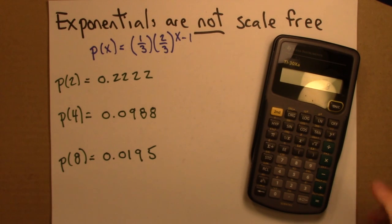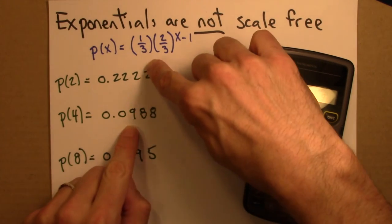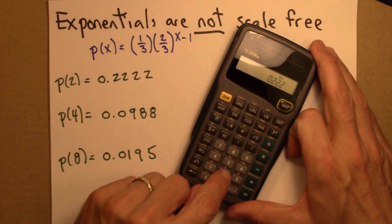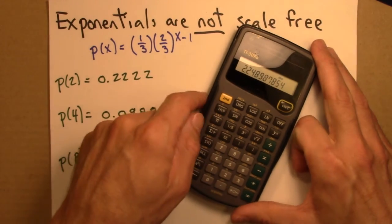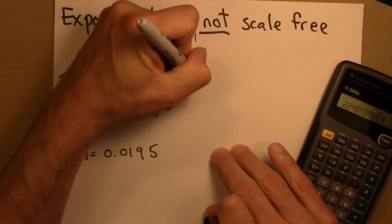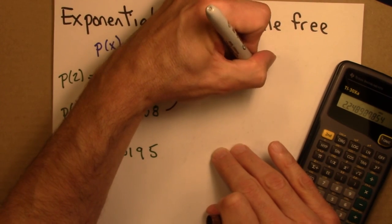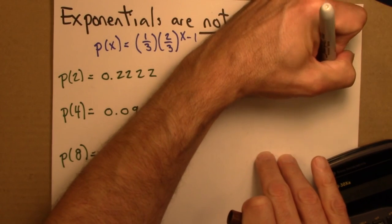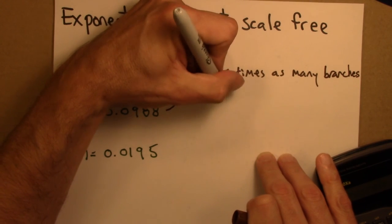Alright, so now I might say, how many more of these are there than those? How much more likely is this than that? So I can just divide, 0.2222 divided by 0.0988, and I get about 2 and a quarter. So, there are around 2.25 times as many branches or whatever that are half this size.